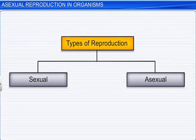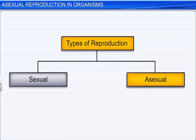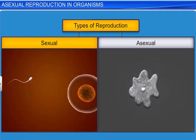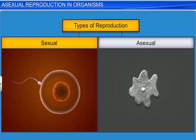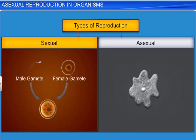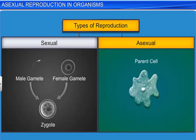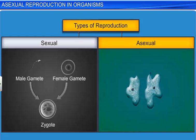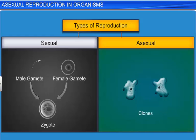In living organisms, we see two types of reproduction: sexual and asexual. In sexual reproduction, a gamete from the male parent fuses with a gamete from the female parent to form a zygote. However, in asexual reproduction, the organism or the parent cell divides to give rise to morphologically and genetically identical organisms called clones.